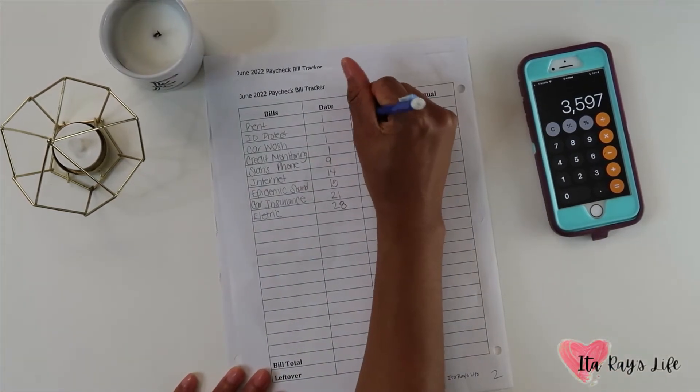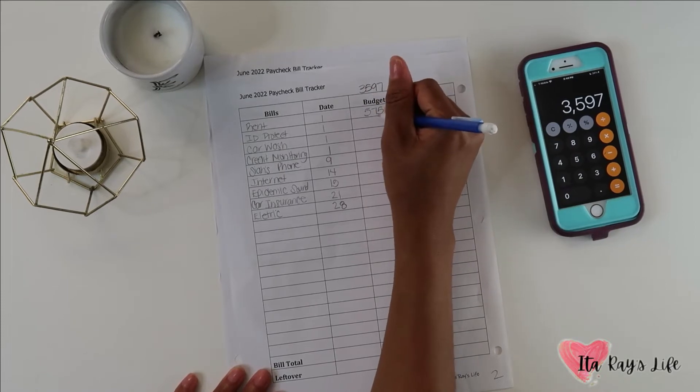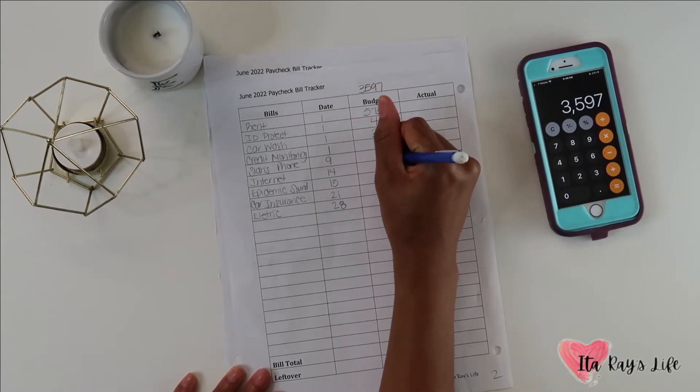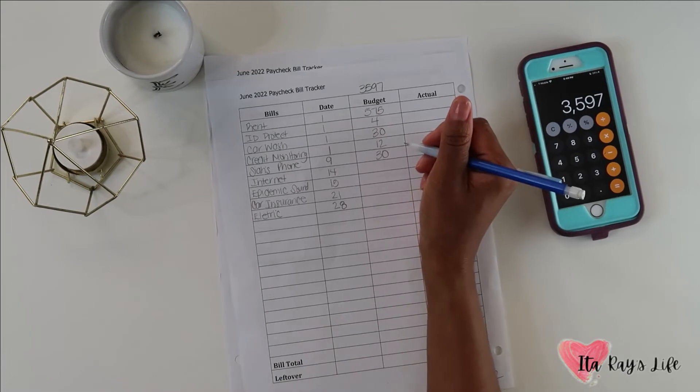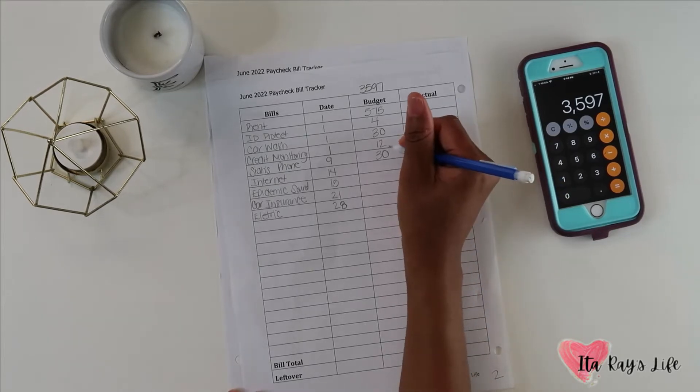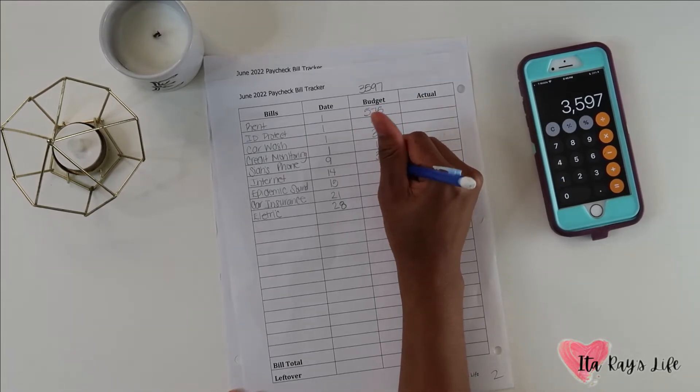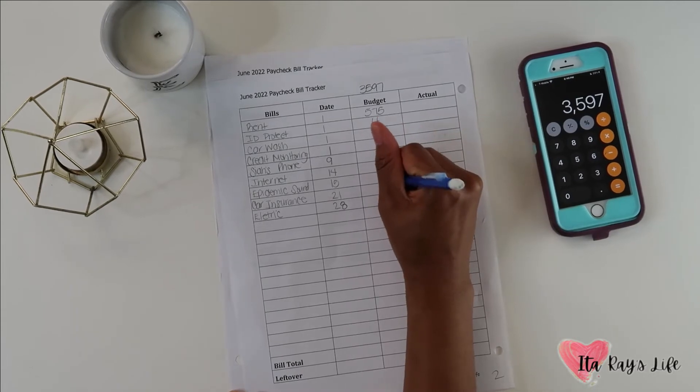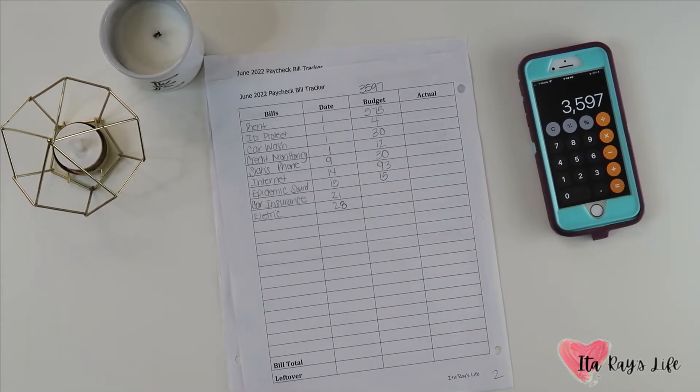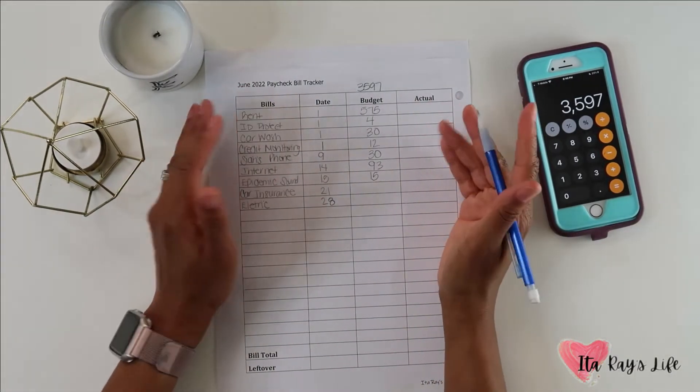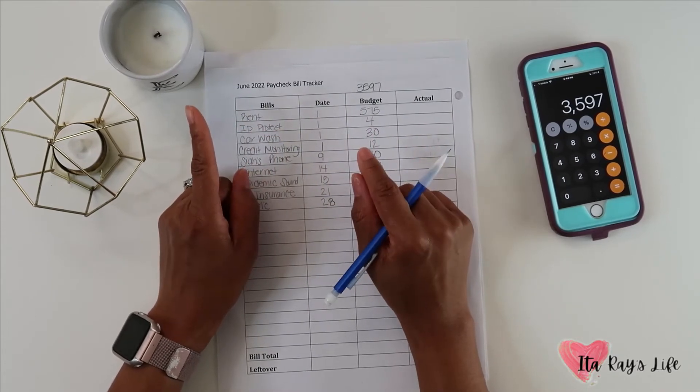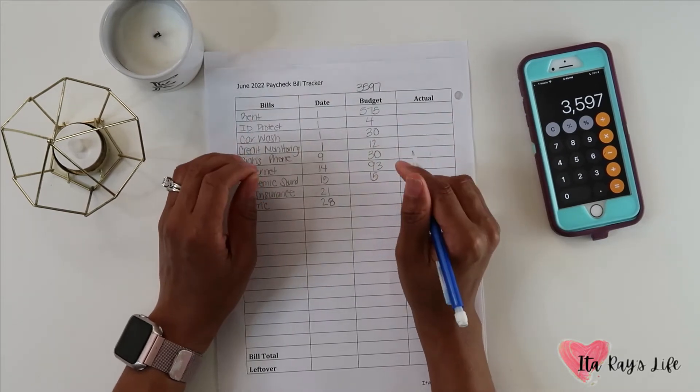My portion of the rent is $575. ID protect is $4. Car wash is $30. Credit monitoring is $12. My son's phone is $30. I think I said last month that I'm making him pay for his own phone bill this month, but I'm gonna start it next month. The internet is $93. Epidemic sound, I did go ahead and cancel that but it's still going to come out in the month of June. I just don't use it. I did have it for my YouTube channels. Speaking of my YouTube channels, I am going to link them up above. I do have a vegan channel, I have this channel, and then I just have a regular channel.